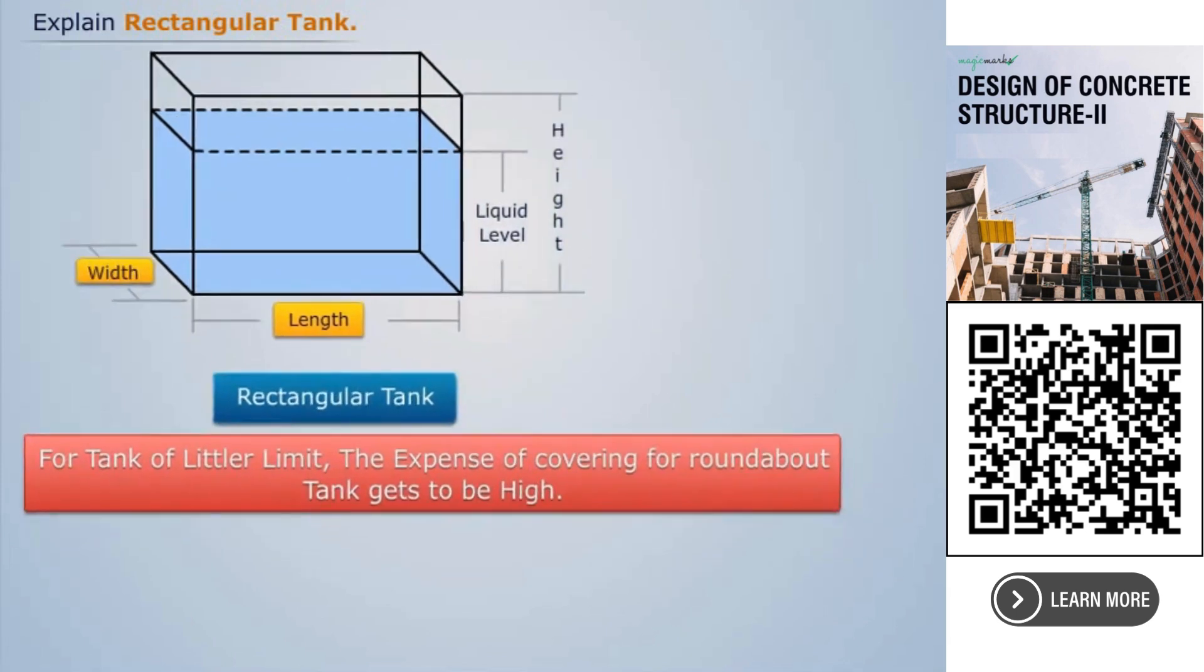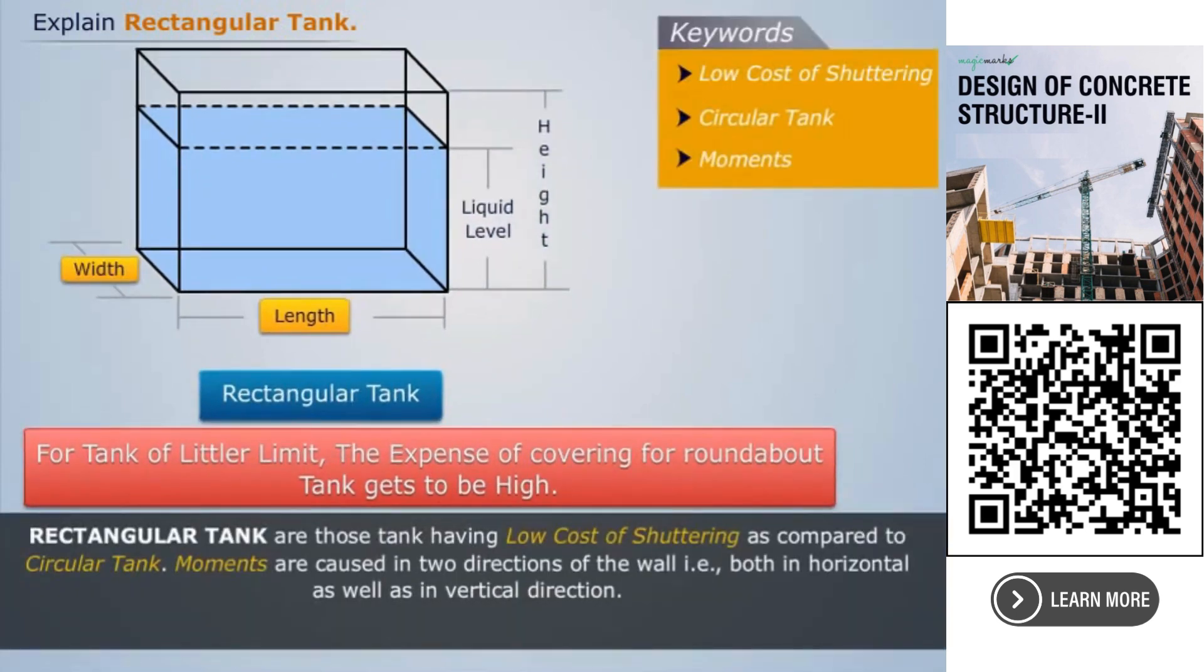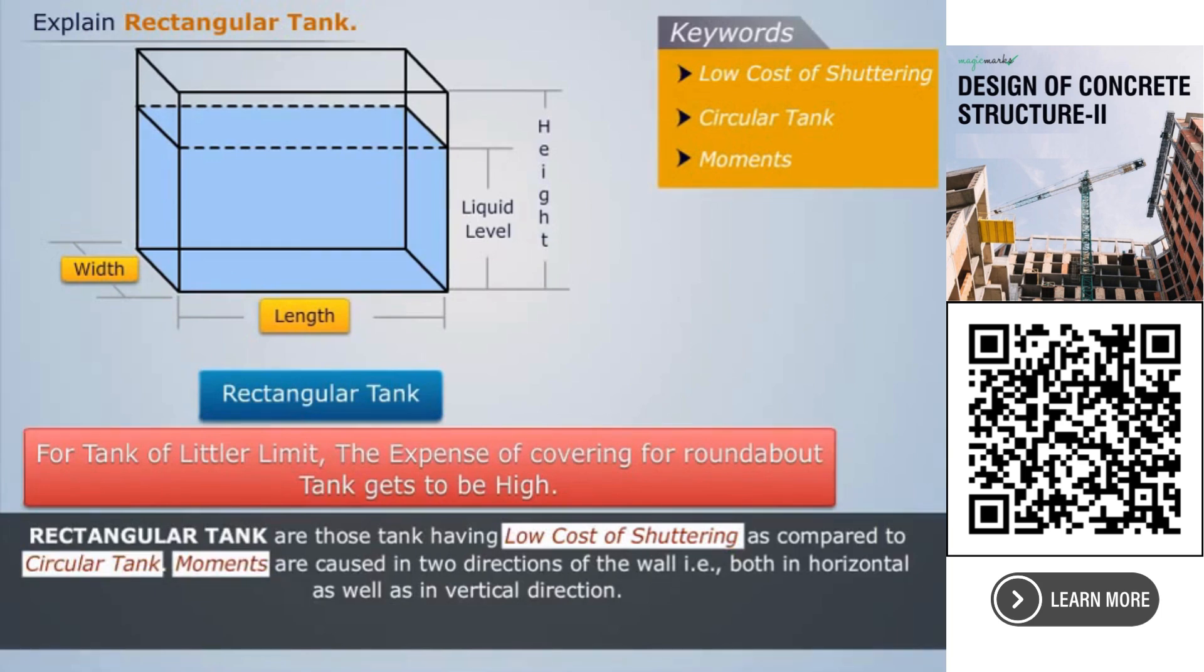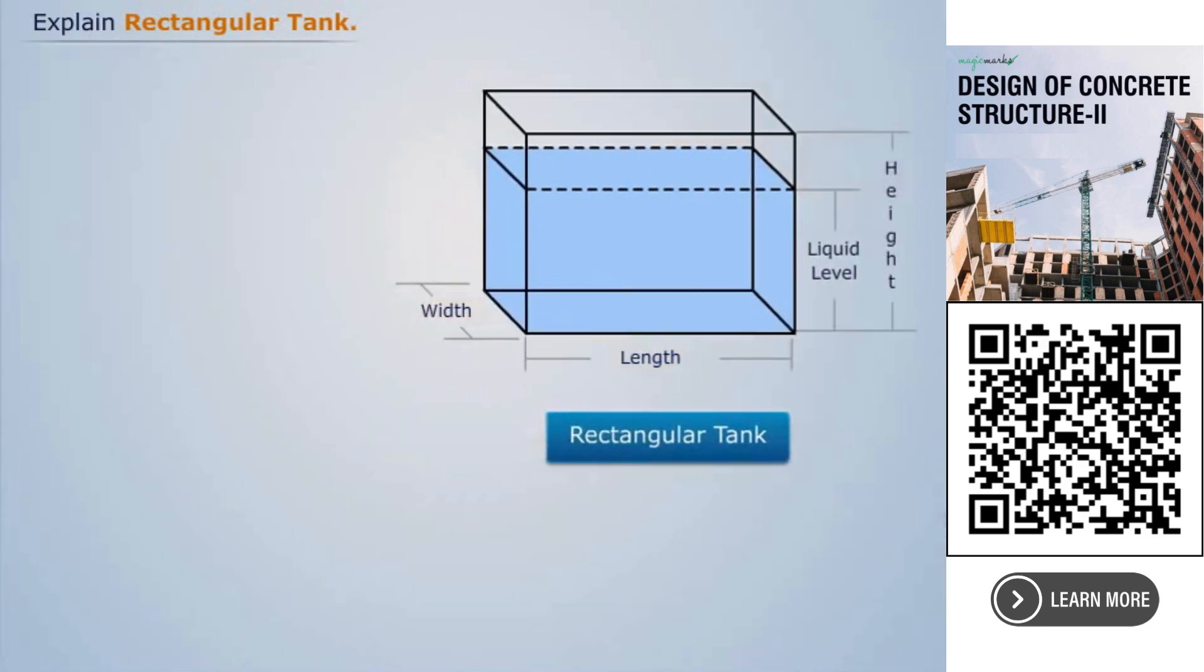Thus, rectangular tanks are those tanks having low cost of shuttering as compared to circular tank. Moments are caused in two directions of the wall, that is both in horizontal as well as in vertical direction.